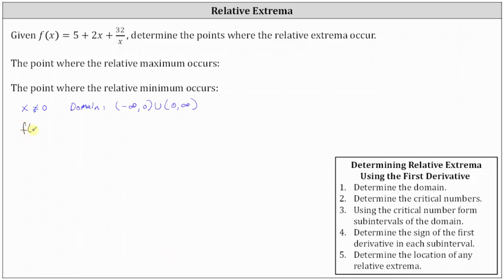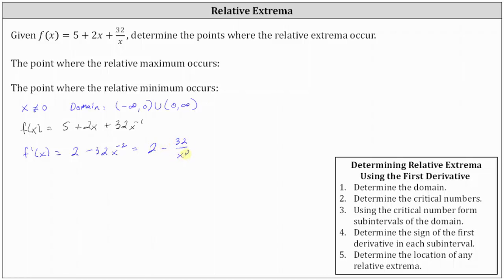So f of x equals 5 plus 2x plus 32x to the power of negative 1. The derivative is 0 plus 2, plus negative 1 times 32x to the power of negative 2, giving us f prime of x equals 2 minus 32x to the power of negative 2. We can rewrite this as 2 minus 32 divided by x squared.